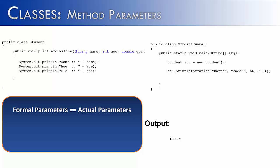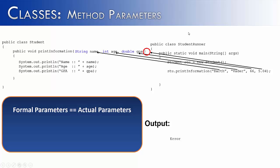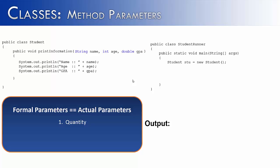In the first example, stu.printInformation is correctly calling the method, but there's a problem. I have four actual parameters — Darth Vader, 66, 5.04 — and a fourth one. The problem is I only have three formal parameters, and this last parameter is just getting lost. Java will not let you do this and will throw an error. Formal and actual parameters must be the same in quantity — if you have three formal parameters, you must have three actual parameters.